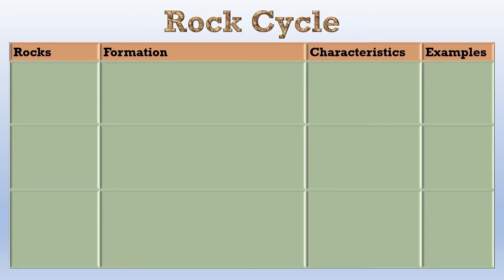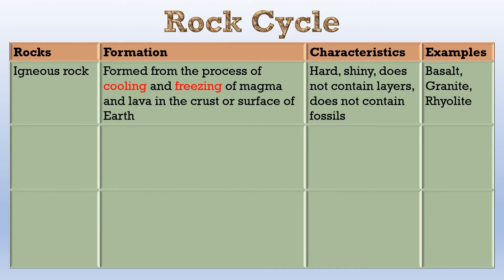To further simplify what we learned in the rock cycle, I've prepared this table below. Let's look at the first one, igneous rocks. They are formed from the process of cooling and crystallising of magma and lava in the crust or the surface of the earth. These igneous rocks are actually hard, shiny and do not contain layers because they are fresh out on the surface of the earth. They usually do not contain fossils as well. Examples are basalt, granite and rhyolite.